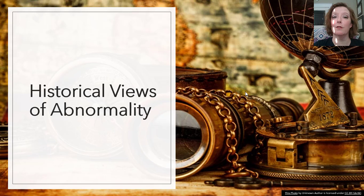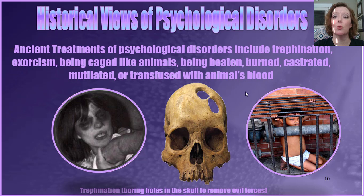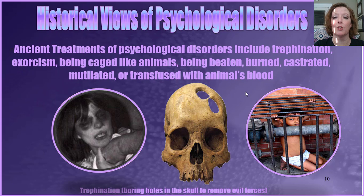So let's look back at how we have viewed psychological disorders historically. We treated mental illness with very barbaric means. This included trephination — basically boring holes into the skull to remove evil forces, and we've actually seen evidence of this in human remains. Also exorcism, being caged like animals, being beaten, being burned, being castrated, being mutilated, and being transfused with animals' blood — all of which were done without the consent of the individual.